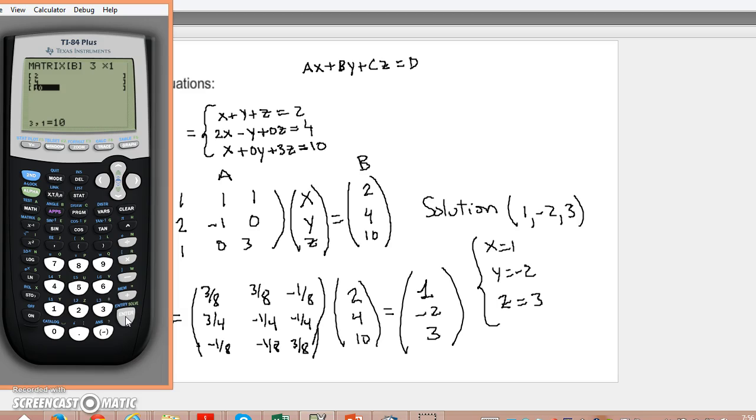So I want to see how is my matrix A. I'm going to second quit here, and then go to second matrix. I'm going to select A, matrix A. I'm going to press the x to the minus 1 button. Press enter.